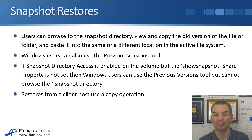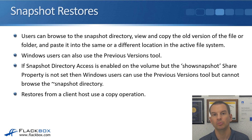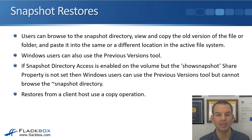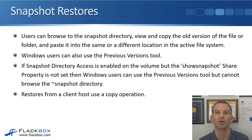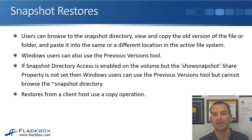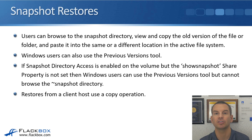If it's just enabled on the volume, Windows users will be able to use the Previous Versions tool, but when they try to browse to the snapshot directory, they're not going to see it. So to be able to browse to the directory, you need to enable it on the volume and on the share as well. Restores from a client host use a copy operation, so let's look at what the client will actually see when they browse the volume and the snapshot directory.